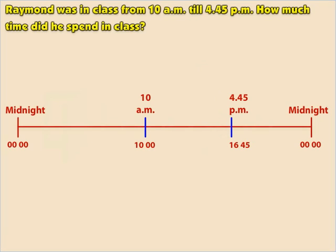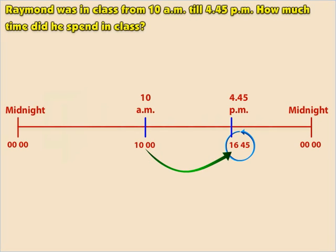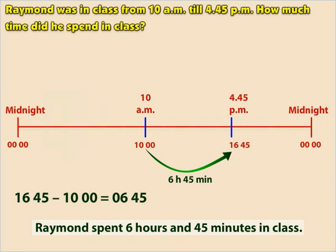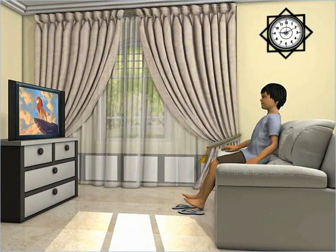There is an alternative way to calculating the time taken. We know that Raymond spent time in class from 10 a.m. to 4:45 p.m. On the 24-hour clock, he was in class from 1000 hours to 1645 hours. If we subtract 1000 from 1645, we get 0645. Remember that the first two digits are the hours and the last two digits are the minutes. Thus, Raymond spent 6 hours and 45 minutes in class.